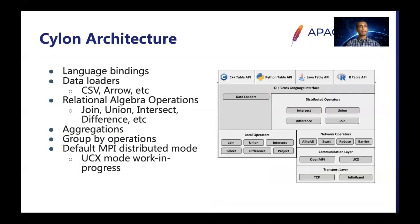Now let's look at the Cylon architecture. Cylon has a communication layer that transfers messages when running at scale. For now, we support UCX and MPI-based communications. UCX is a communication library that can transfer messages between nodes using different networking hardware. MPI is also used as a communication library. It has a set of local operators and distributed operators. It also provides data loaders for some common formats. Because it uses the Arrow format, you can easily convert data between Pandas and NumPy without much overhead. On top of this, it provides C++ and Python interfaces. A Java interface is something we are working on and R is a future API.